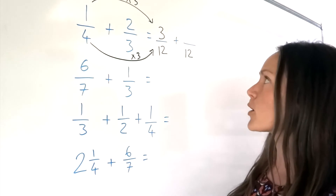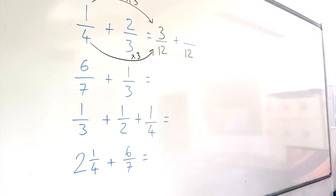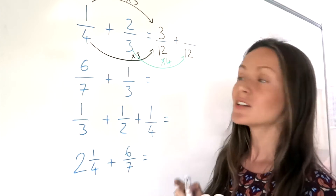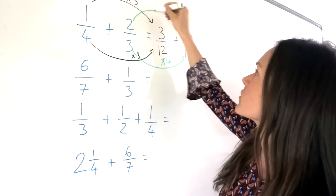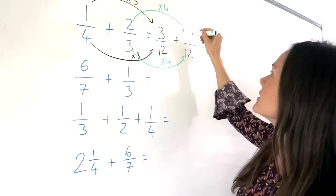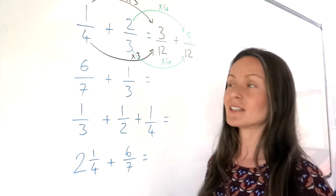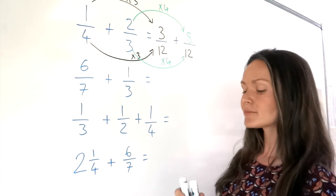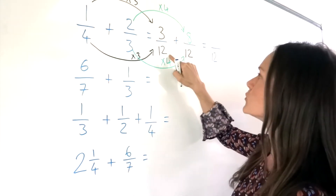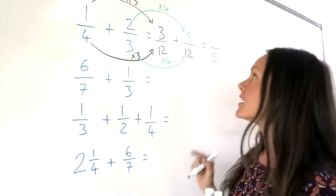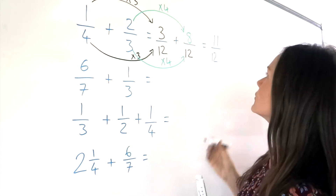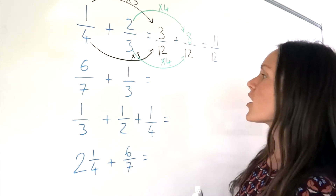Now for the next part. To get from 3 to 12, I multiply by 4. So we have to do the same thing with the numerator up here — I'm going to multiply this 2 by 4. So 2 multiplied by 4 is 8. Now that I've got common denominators, I'm allowed to add these two fractions together. When I add the two fractions together, the denominator doesn't change — do not do 12 plus 12, it stays the same. It's only the top two numbers, 3 and 8, that we're adding together. So 3 plus 8 is 11. That's the first question.